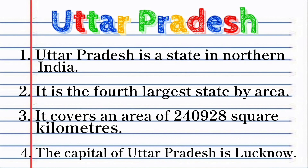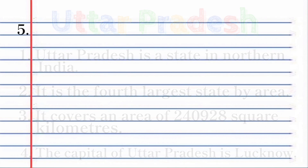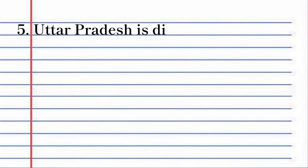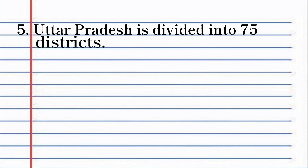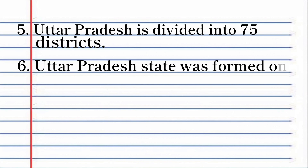The capital of Uttar Pradesh is Lucknow. Uttar Pradesh is divided into 75 districts. Uttar Pradesh state was formed on 24 January 1950.